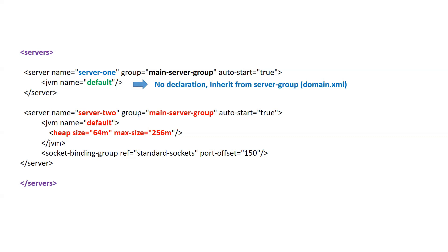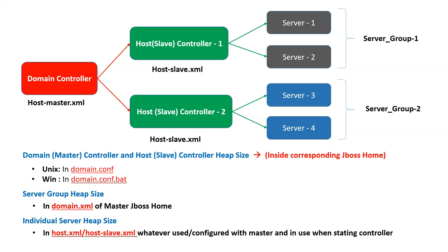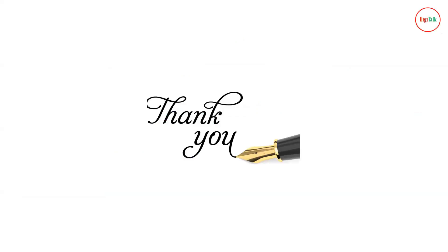To summarize: to define a custom heap for your master and slave controllers, update domain.conf on Unix or domain.conf.bat on Windows. To change the heap size for a particular server group, update the domain.xml file of the master JBoss instance. To update the heap size for an individual server, update the corresponding slave host.xml file. That covers all the JVM settings for JBoss — stay tuned for more interesting videos.